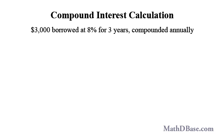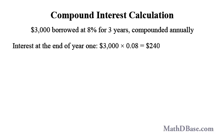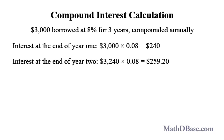How much interest accrues over 3 years at 8% on $3,000 if the interest is compounded annually? At the end of the first year, the interest is 8% of $3,000, or $3,000 times 0.08, which is $240. The new principal is the original principal plus the first year's interest, or $3,000 plus $240, or $3,240. At the end of the second year, the interest is 8% of $3,240, or $3,240 times 0.08, which equals $259.20.